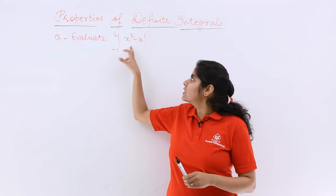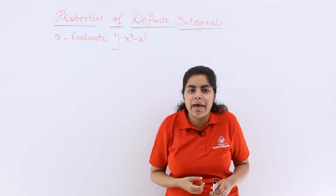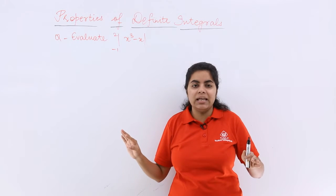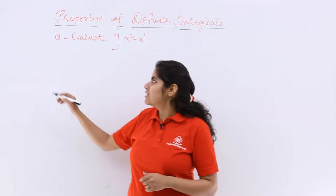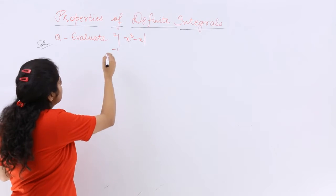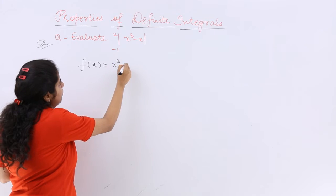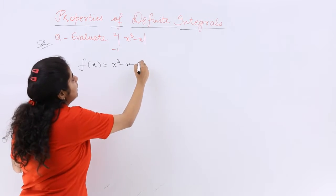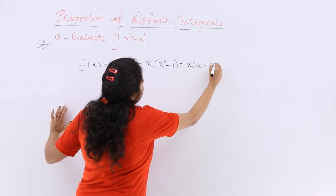If it were x³ - x directly I could have integrated and gotten the answer in barely two minutes, but this has a modulus sign so I have to remove it in order to proceed with the solution. So let's say f(x) is the function x³ - x. With the modulus I know this can be solved by taking certain things common and making its factors.